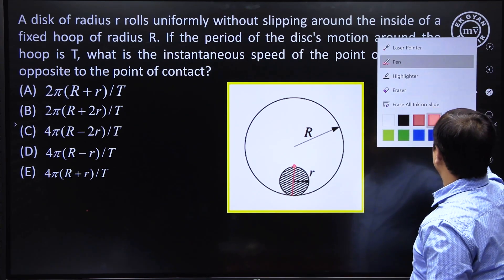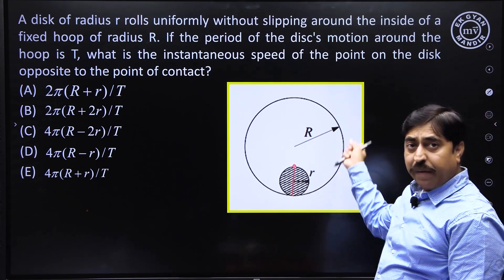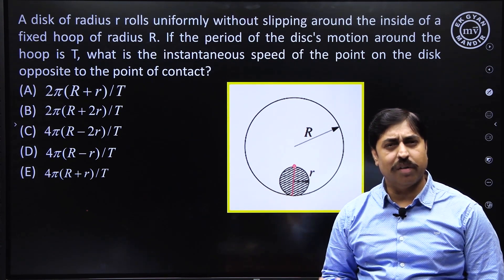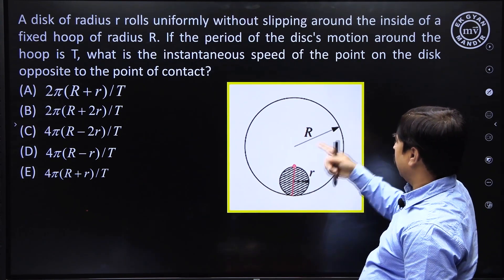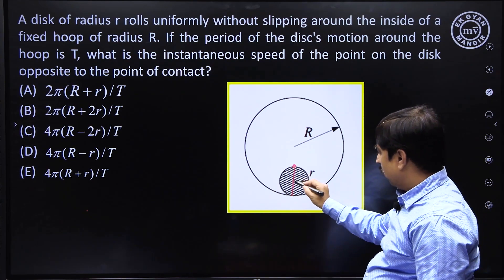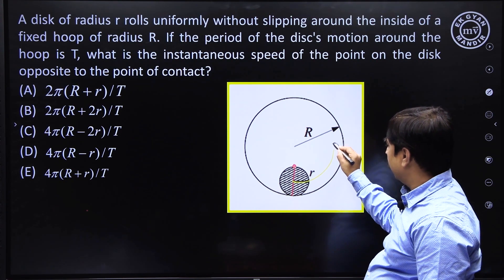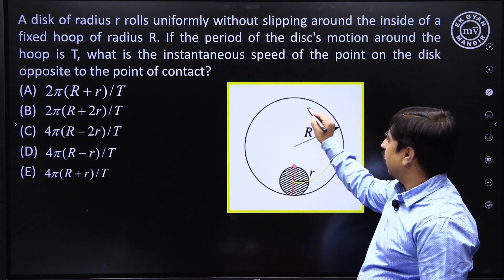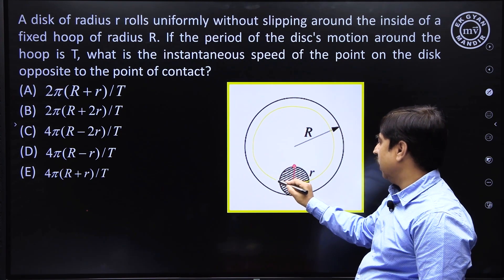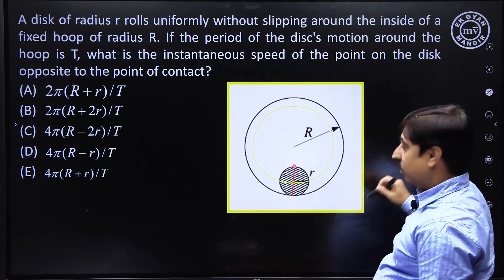This is a really simple question. If the time period is T, what is the angular speed? The angular speed of revolution is 2π divided by the time period T.